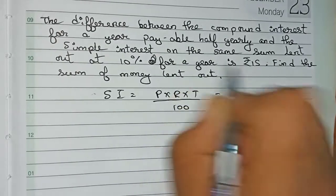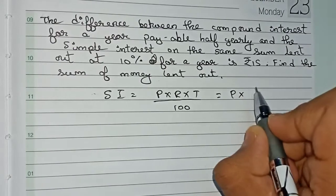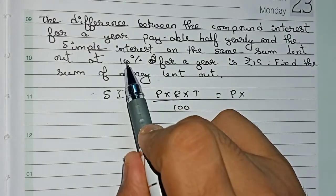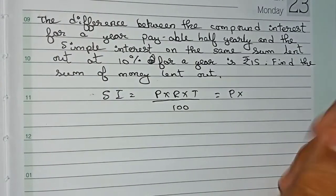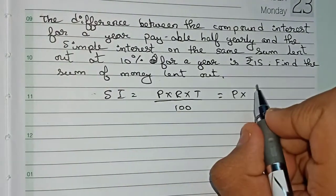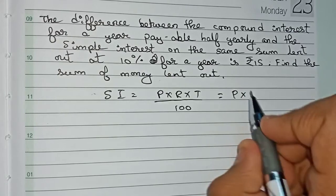We put down the values. Principle is unknown, so our principle is P. Rate is given as 10 percent per half year, so 10 percent per half year means you have to divide it by 2. So 10 divided by 2 is 5 percent. In this question, our rate of interest will be 5 percent.